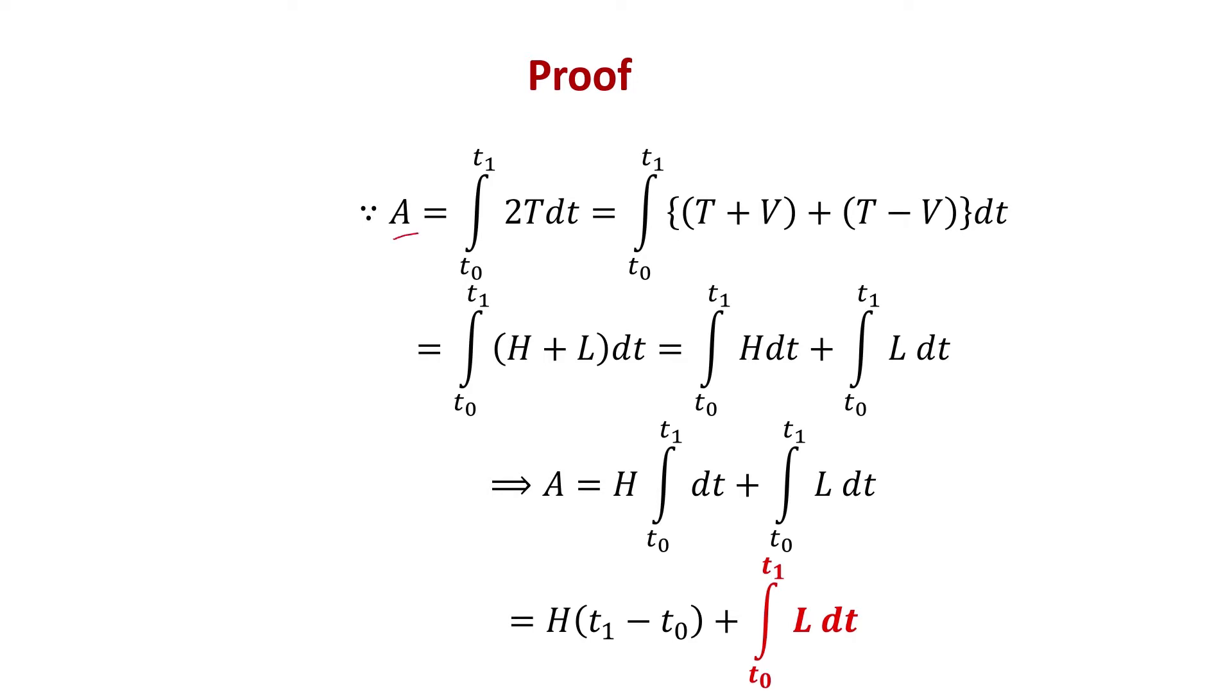Since action is given by the integral from t0 to t1 of 2T dt, we can write 2T as (T + V) + (T - V). We know T + V is the total energy or the Hamiltonian H, and T - V is the Lagrangian L. So we separate the integration into two parts: one for H and one for L.